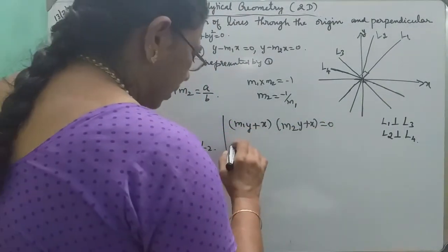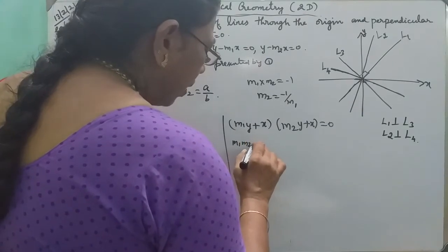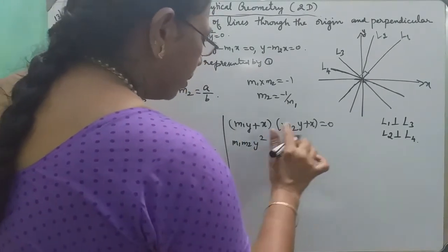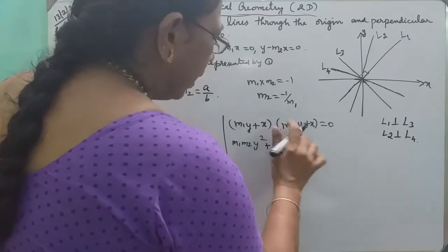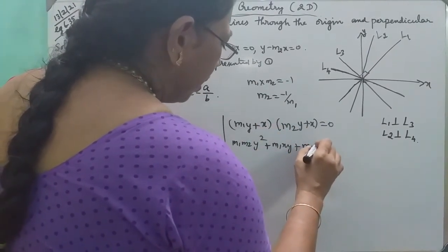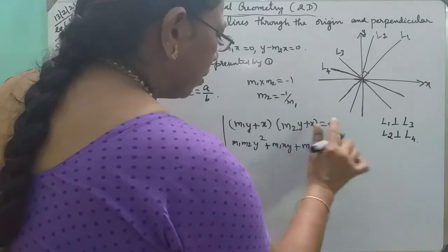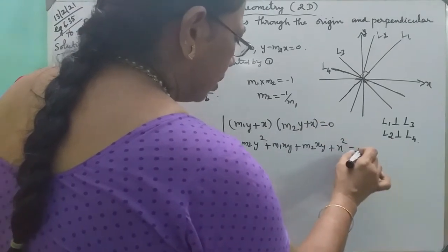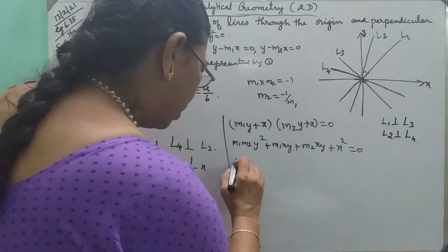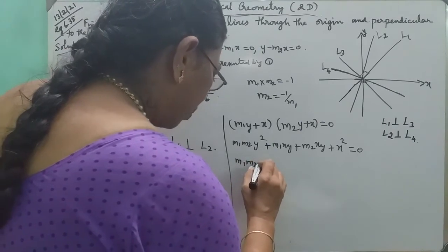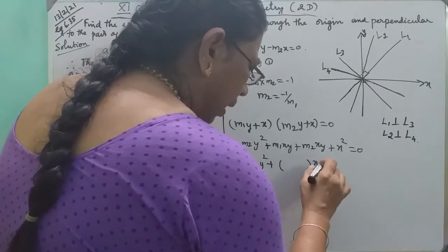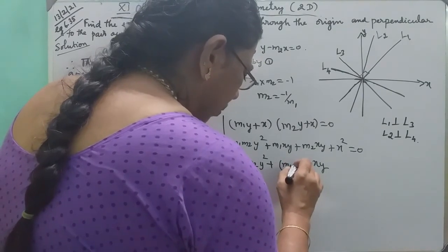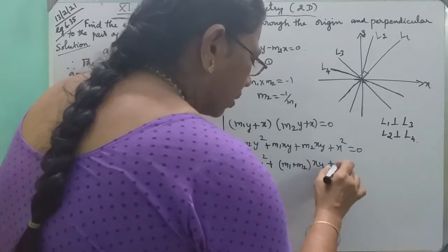First into first: M1 into Y square. First into second: M1 into XY. Second into first: M2 into XY, X square equal to 0. M1 into Y square plus XY common: M1 plus M2, plus X square equal to 0.